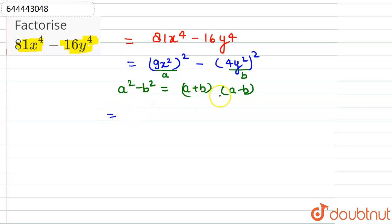Now we can write this as a plus b, a minus b. A is 9x square and b is 4y square, so 9x square plus 4y square into a minus b. A is 9x square minus 4y square.